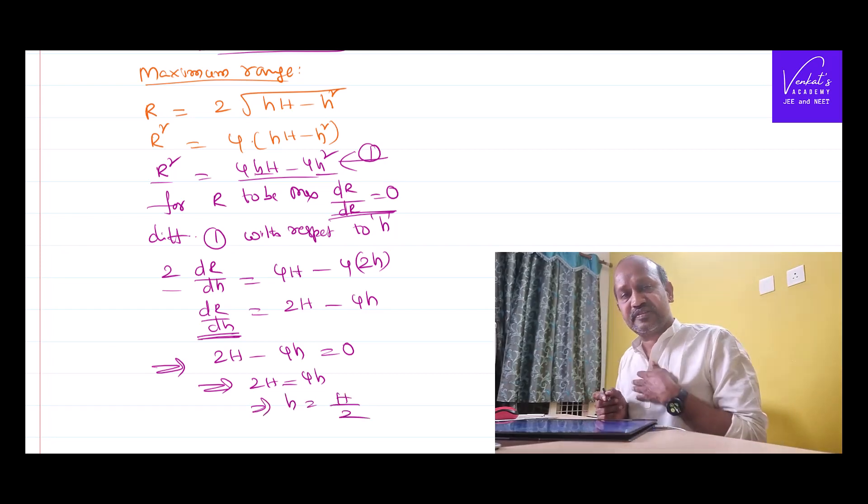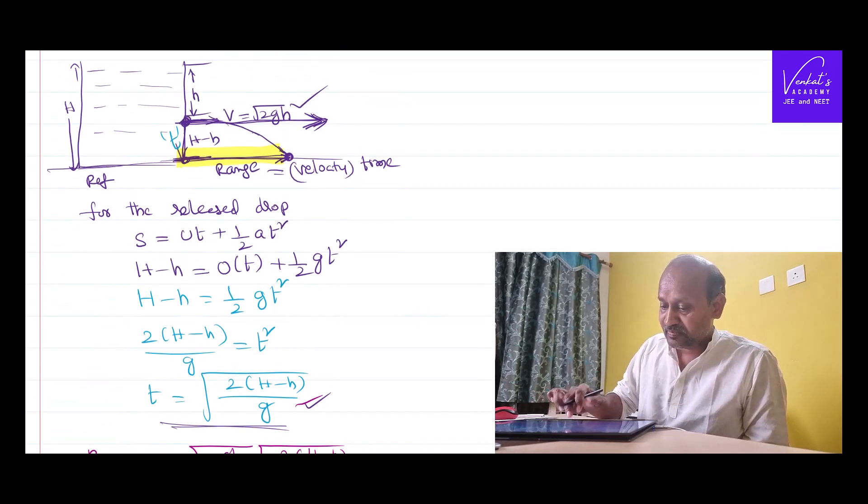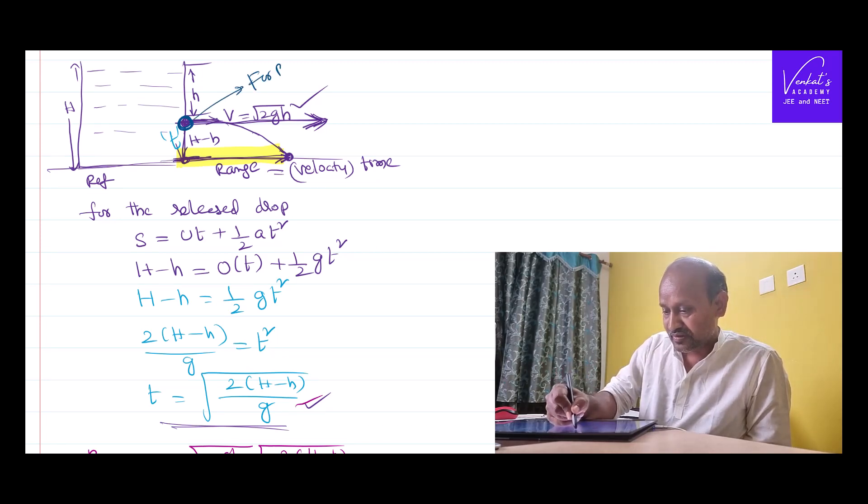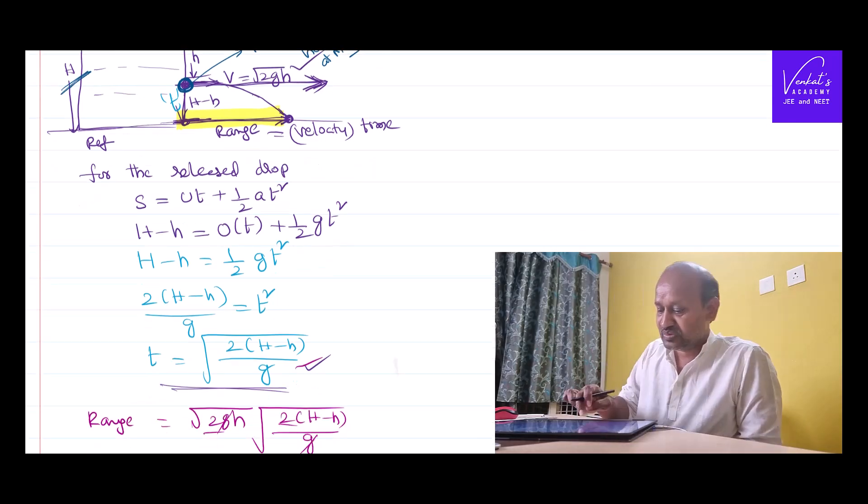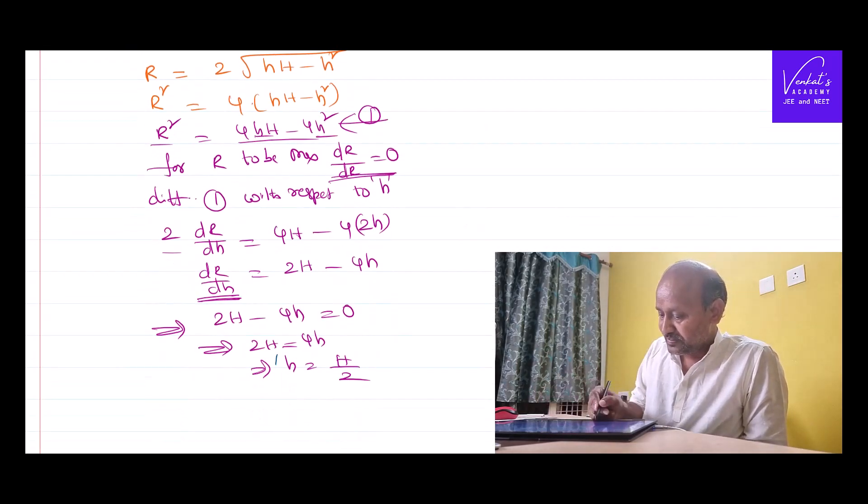That's the lesson we have learned. What is that lesson? You have to keep this opening at H by 2. That means for range maximum, that small opening has to be at the middle of the total height. If the total height is H, just exactly punch it at the middle of that height. So that, as we have proved, that range will be maximum.